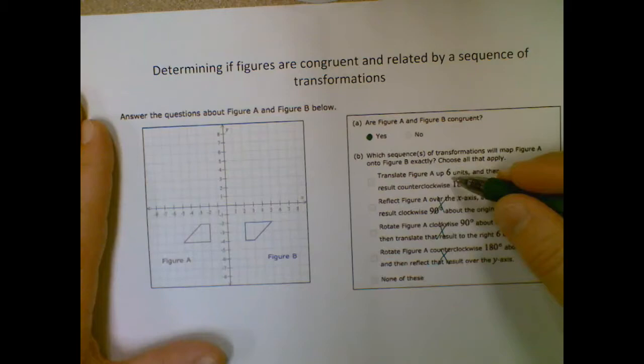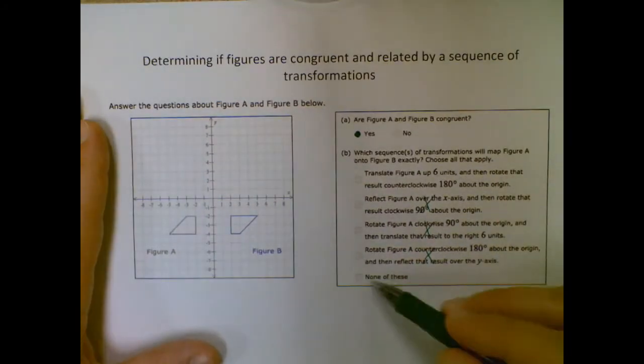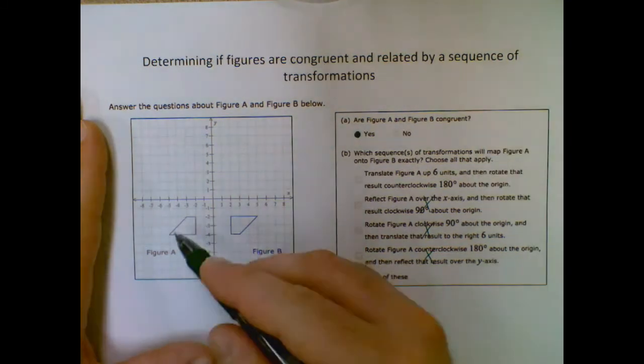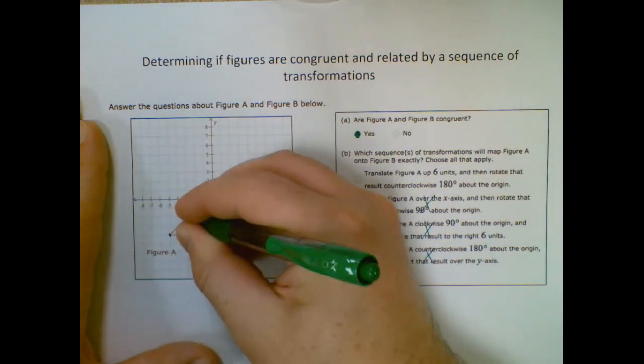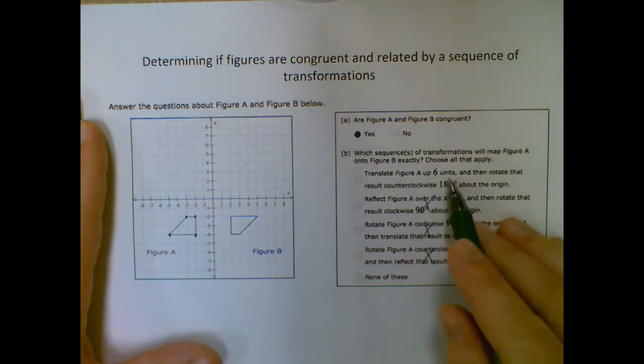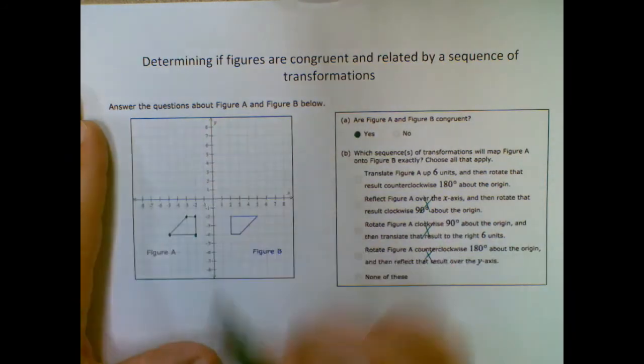So I only have one feasible answer. But since I do have a none of these option, I do want to make sure that actually works. So what I'm going to do is I'm going to take my vertex points then, so you can see what I'm doing here. Move those up six units and then rotate 180 degrees counterclockwise.